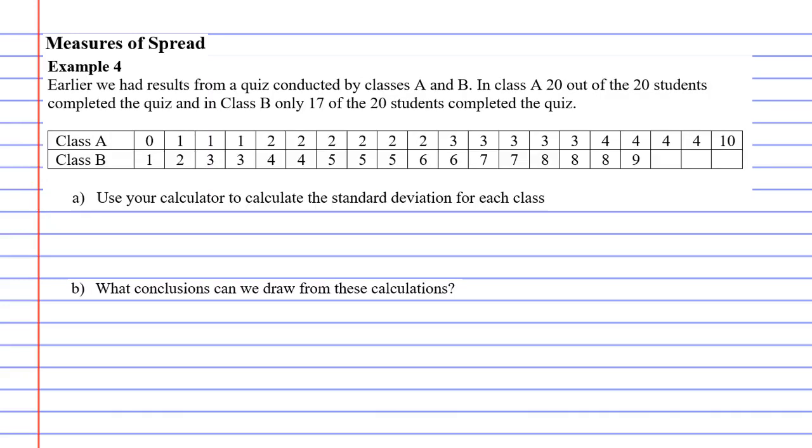We're going to go right into the example, example 4, and we've got the same two classes we've been talking about throughout this whole topic, class A and class B, and the same results.